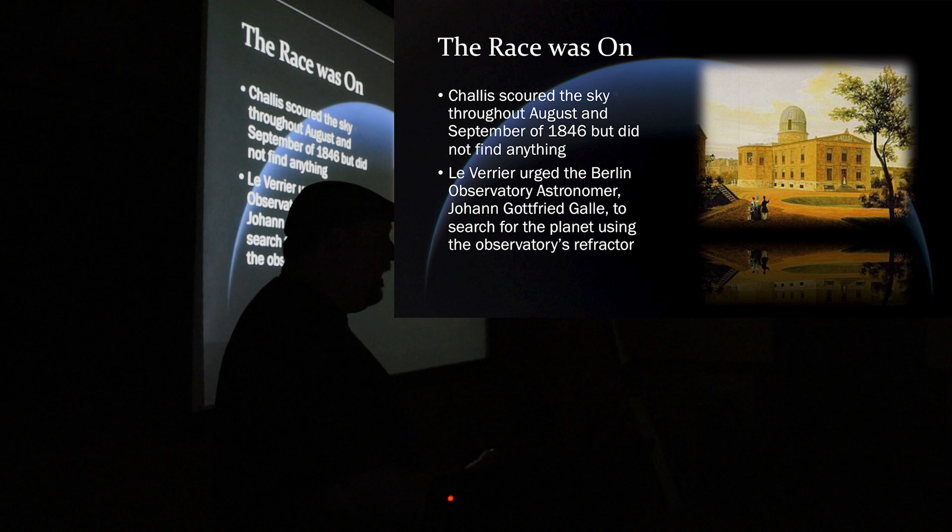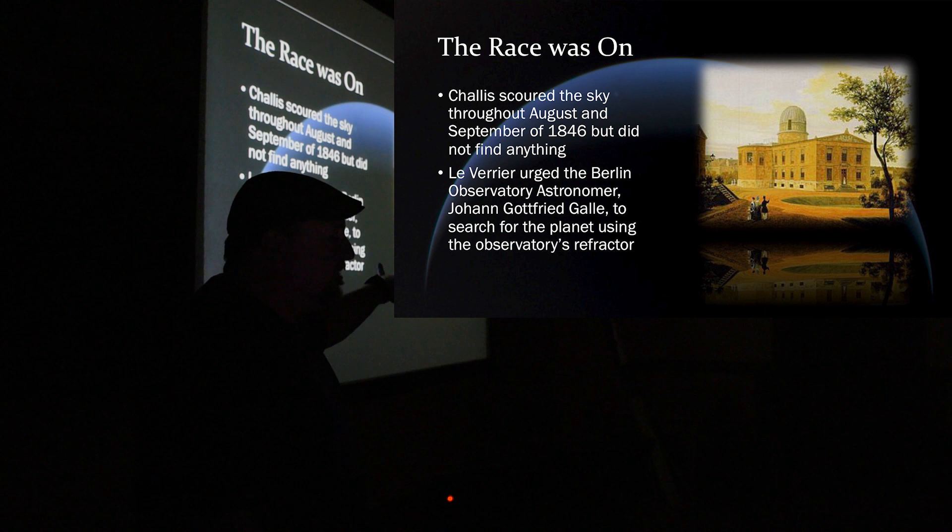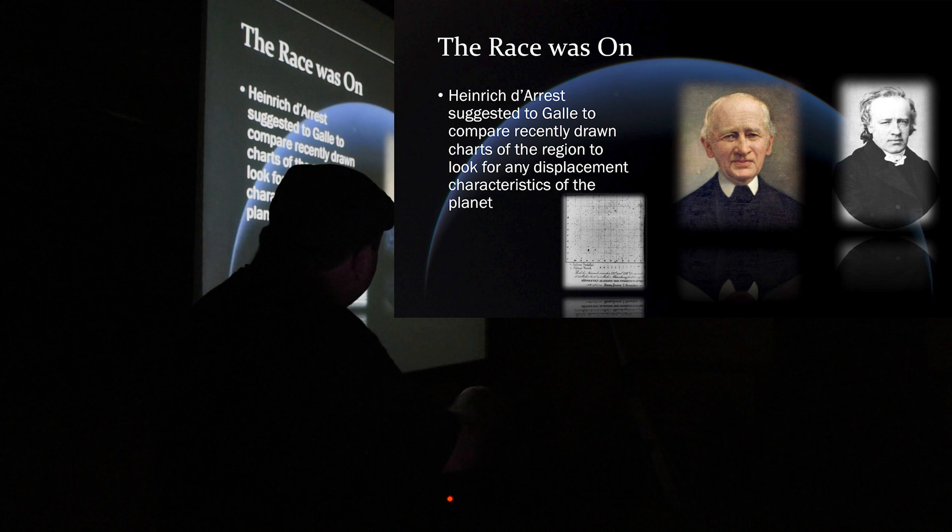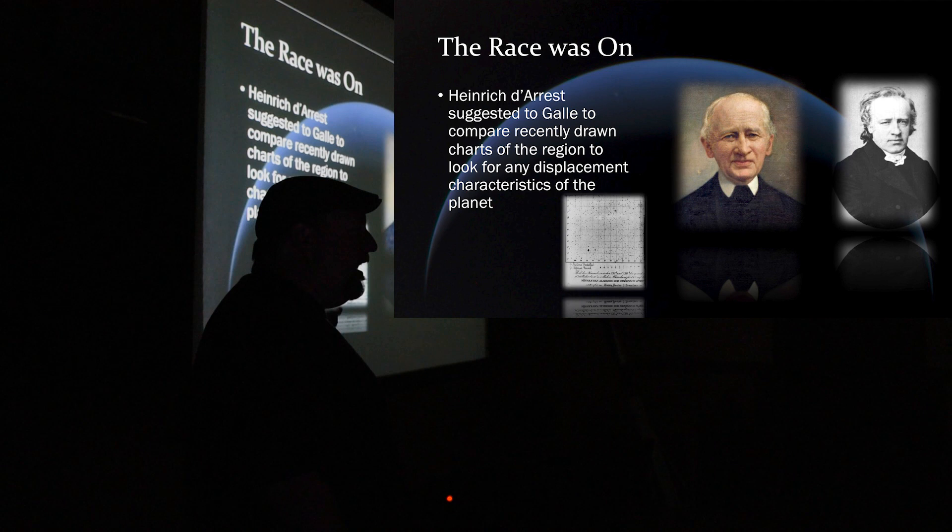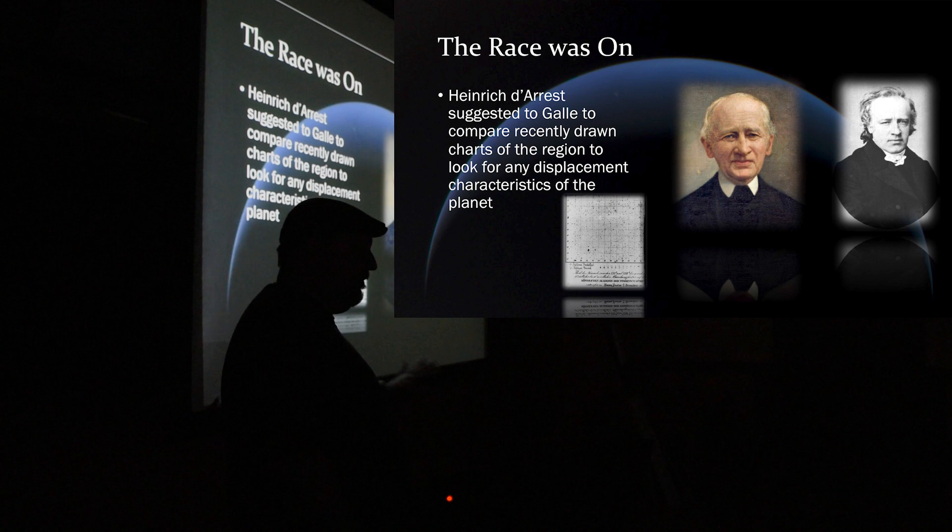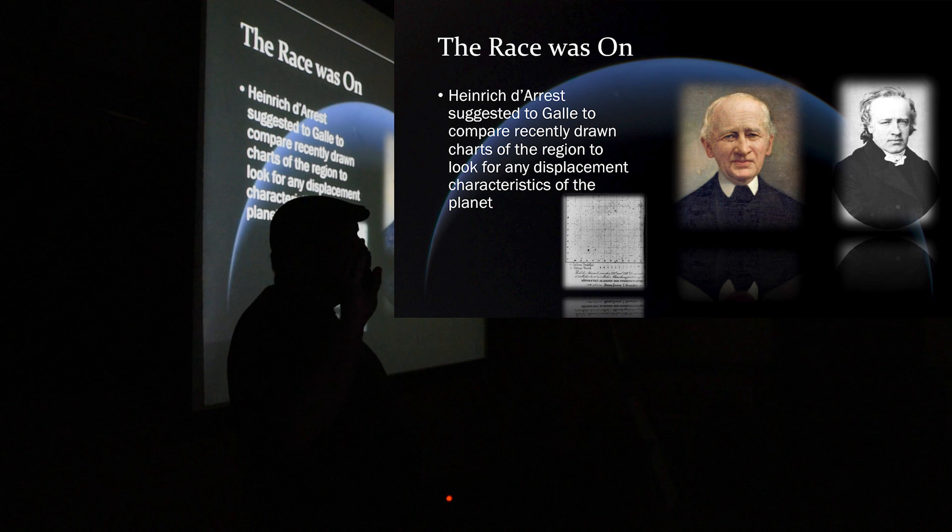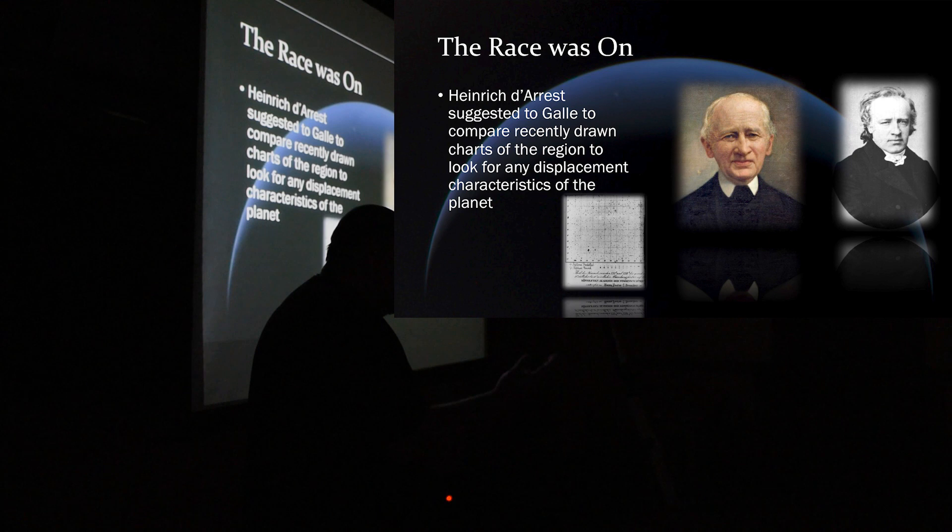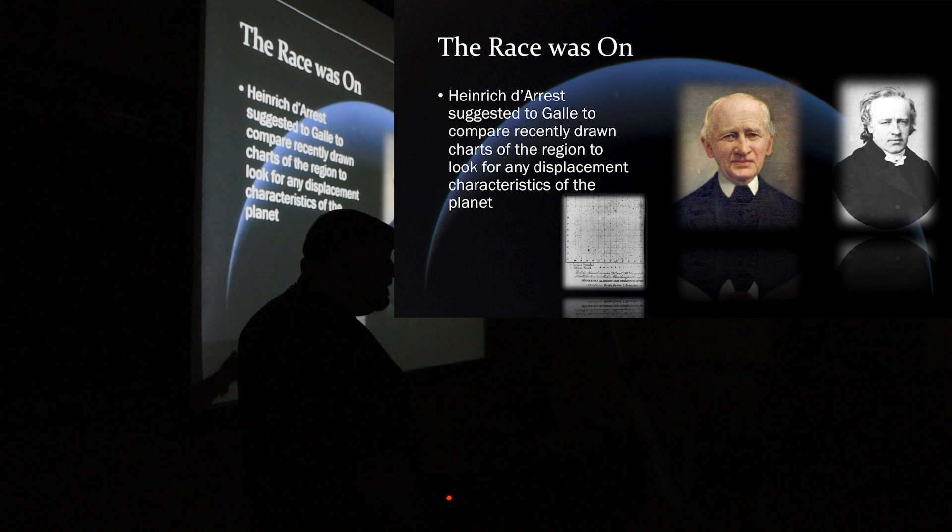So, Challis is in England looking for the planet. Now, there are astronomers in Berlin looking for the planet. But Berlin Observatory had an advantage. So, there was a student there by the name of Heinrich d'Arrest, and that's him right there. By the way, that's the director, Gottfried Galle. Berlin had some recently drawn star charts of that region where the prediction was going to be. The prediction was at the time between the constellations of Aquarius and Capricornus. They had a recently drawn star chart there, and the student over there, d'Arrest, said, why don't we take the star charts, compare that to what we're seeing in the eyepiece, and look for something that's different. And that's how they found it.